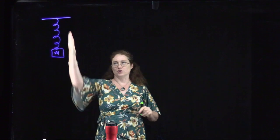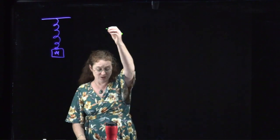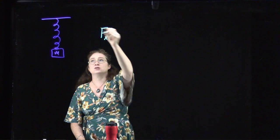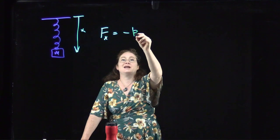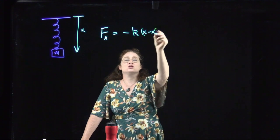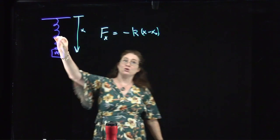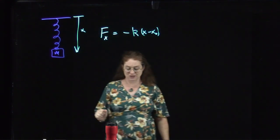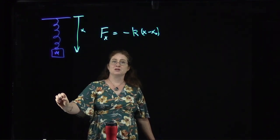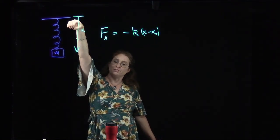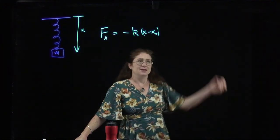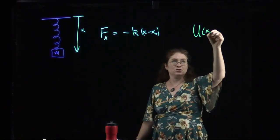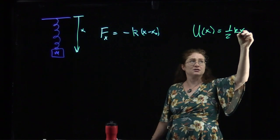We'll assume a one-dimensional mass on a spring — something like this where the spring and mass can only move in one dimension. The force in the x-direction, where x is defined along the vertical, is negative k times (x minus x0), so that it is always a restoring force wherever the equilibrium position x0 is. It tries to bring the mass back to the equilibrium position. This has the form for the potential energy of one-half times the spring constant times x squared.